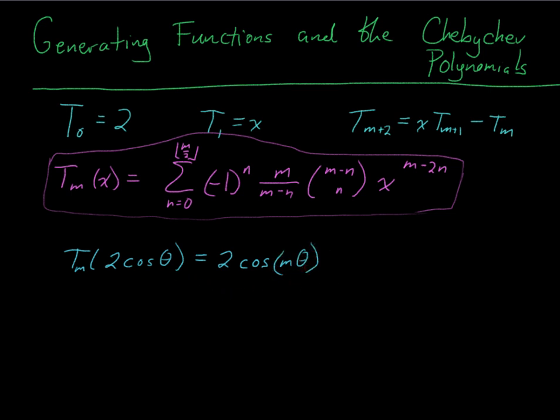So let's check if this works. If m is 0, this is just 2, so T₀ is just 2.